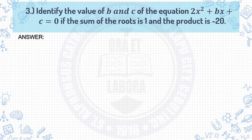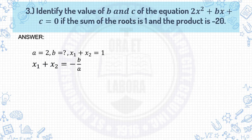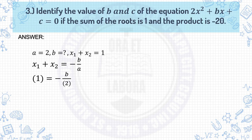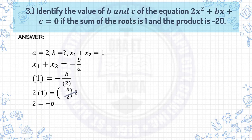Number 3: Identify the value of b and c of the equation 2x² plus bx plus c equals 0, if the sum of the roots is 1 and the product is negative 20. First, identify the value of a and the sum to determine the value of b. Write the formula: x₁ plus x₂ equals negative b over a. Substituting, the sum x₁ plus x₂ is 1 and a is 2, so 1 equals negative b over 2. Multiplying both sides by 2, we get 2 equals negative b, which gives b equals negative 2.